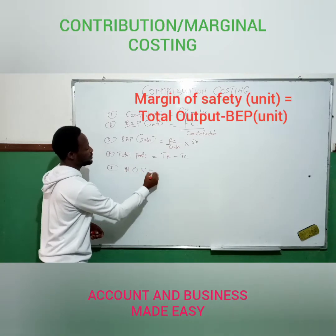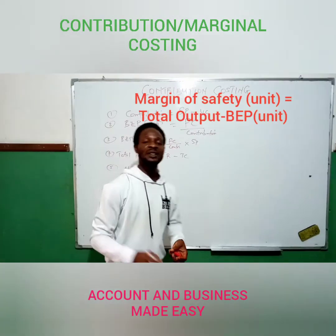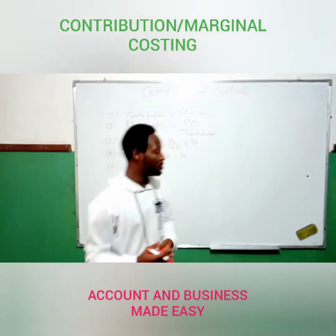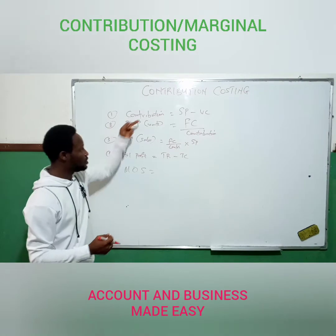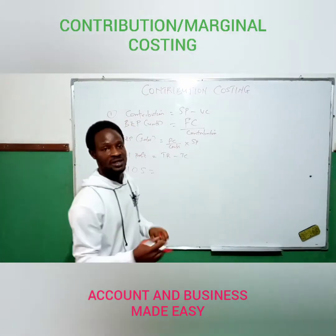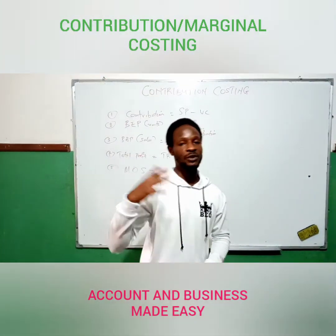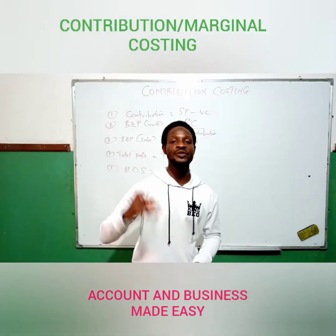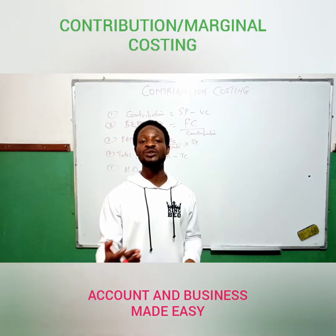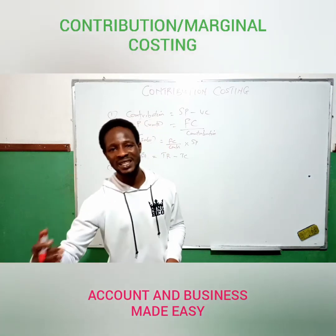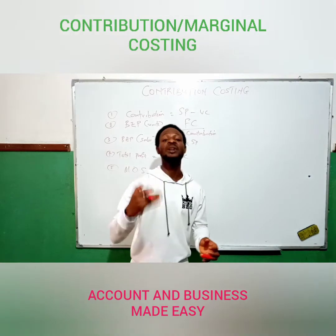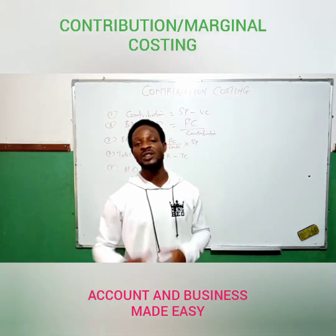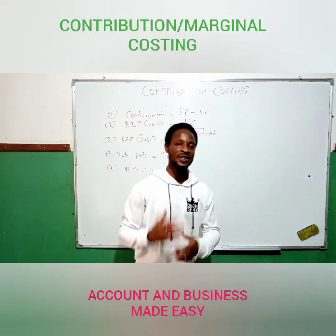We have margin of safety — MOS. We have it in units and in sales, just as we have break-even point in units and in sales. Margin of safety in units is the number of units that may be produced below the capacity level that you will still avoid loss — that you will still be saved from loss. That is margin of safety.